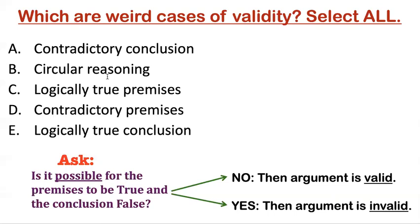How about circular reasoning? Is it possible for those premises to be true and the conclusion false? The answer here is no — that's one of the weird cases. Circular reasoning happens when your premise is the same as your conclusion. If my conclusion and my premise are the same thing, is it possible for one to be true and the other false? No. If my premise is true, my conclusion has to be true, because my premise is my conclusion. So circular reasoning is actually one of the weird cases of validity.